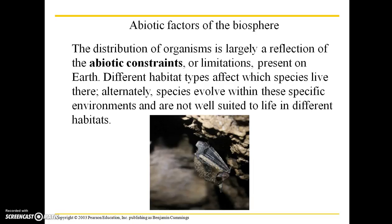Abiotic factors are incredibly important in shaping the distribution of species we see today. The distribution of organisms is largely a reflection of these abiotic constraints or limitations on Earth. Different habitat types affect which species are able to live where, and alternatively, species evolve within these specific environments and are not well suited to life in different habitats. You can look at it from either angle: this habitat type limits what species are there, but the species you find in a particular habitat are there because they evolved to take advantage of those environments.